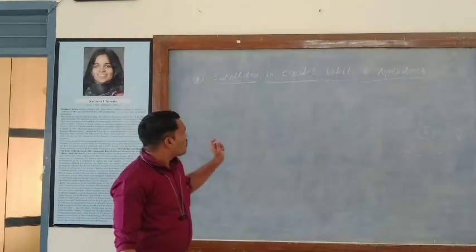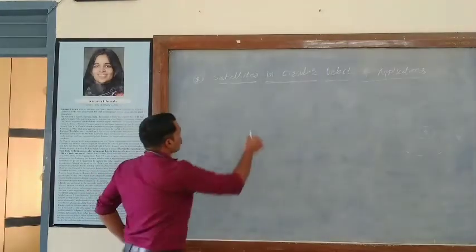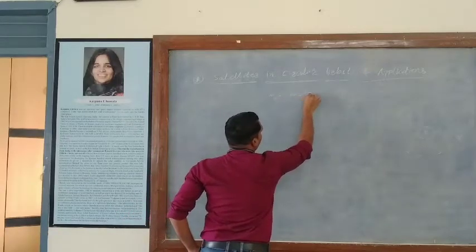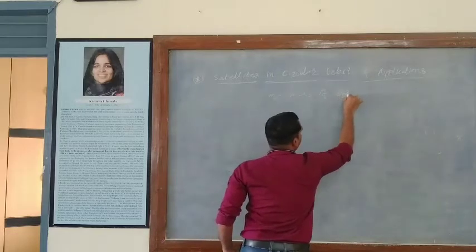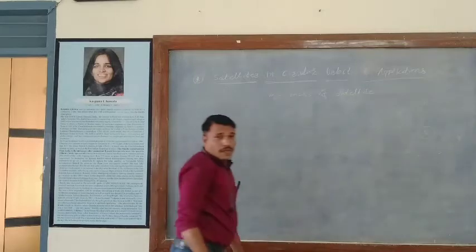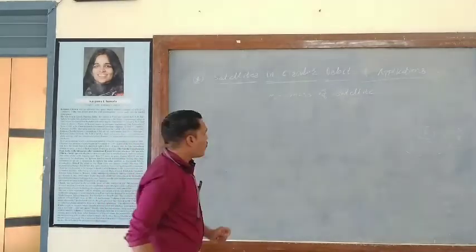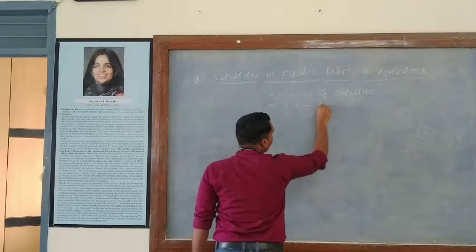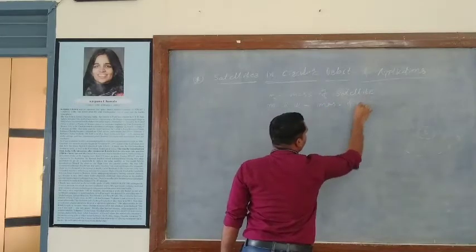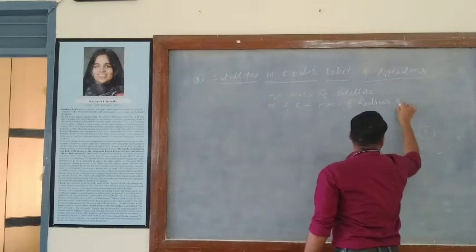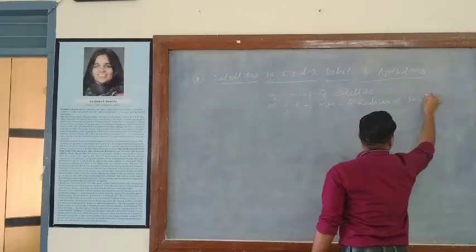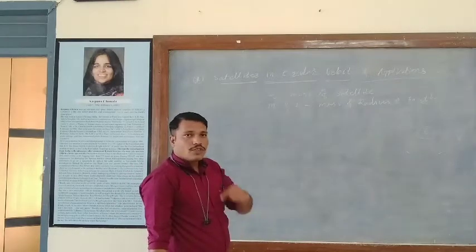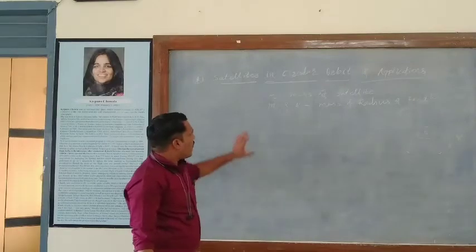Now let us suppose we have a satellite which is having mass m, orbiting around the Earth which is having mass M and radius R — where M and R are the mass and radius of the Earth. Suppose this satellite is orbiting around the Earth at a height H, where H is the height of the satellite from the Earth's surface.